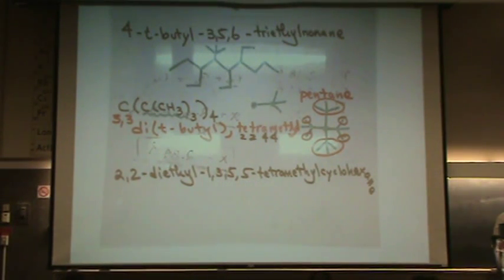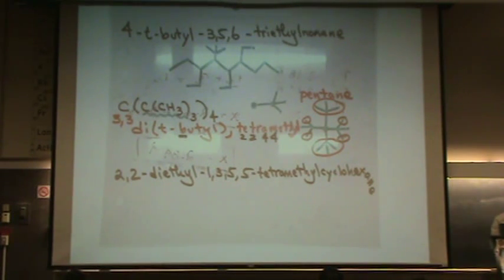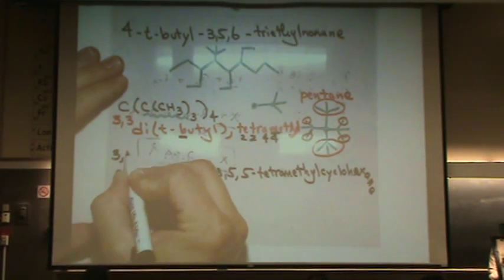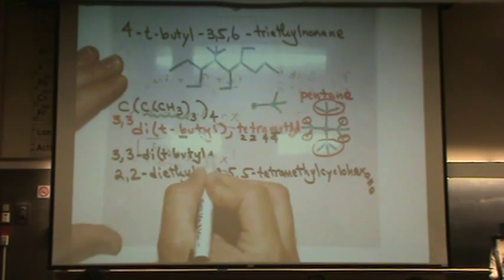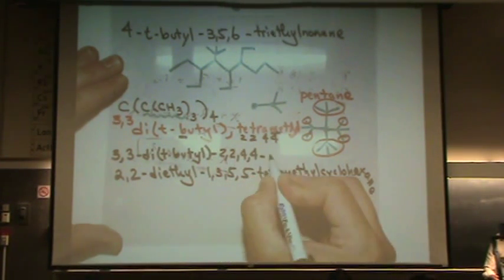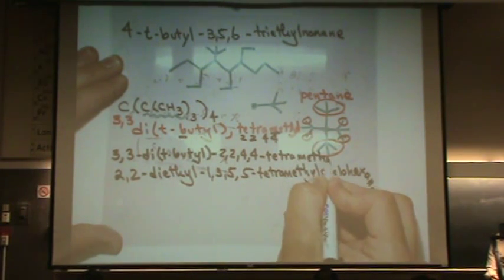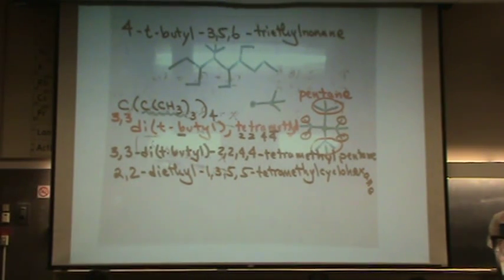Now I'm going to put all that together. For the t-butyl, you count, and I'll underline in black, the B in alphabetical order. So the T in the t-butyl doesn't count for the alphabet. And then M for methyl. So the butyl is actually going to come first. So it'd be 3,3-di-t-butyl. And then it's 2,2,4,4-tetramethyl. And then pentane. So 3,3-di-t-butyl-2,2,4,4-tetramethylpentane.